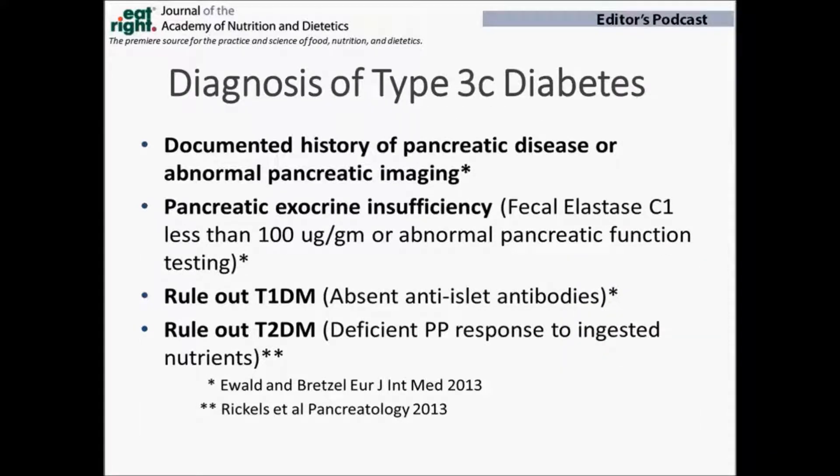Can you tell us more about the differential diagnosis of type 3C diabetes? This is very much a subject of current research being performed by the National Institutes of Health. Our working algorithm is: if a person develops diabetes after a known history of pancreatic disease or documented pancreatic insufficiency, it is almost certainly type 3C diabetes. It's also important to rule out type 1 diabetes, which can be shown if there are no anti-islet antibodies to indicate autoimmune disease. To rule out type 2 diabetes, the best test may be to confirm a low level of pancreatic polypeptide after a test meal — an actual mixed meal or the hormone response to a liquid dietary supplement such as Ensure or Boost. A low PP level makes type 3C diabetes the likely cause.